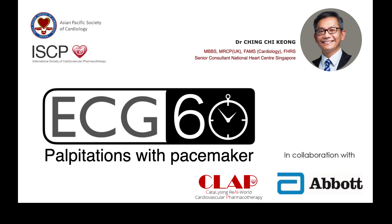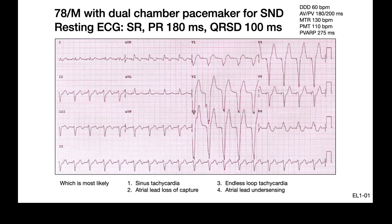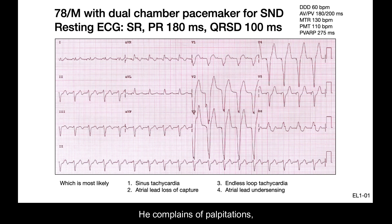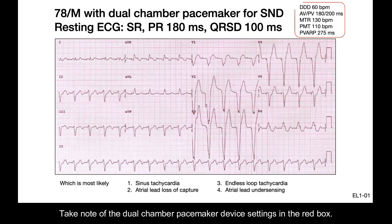This is ECG in 60 seconds. A 78-year-old man with a dual chamber pacemaker for sinus node dysfunction complains of palpitations, and this is a resting ECG recorded. Take note of the dual chamber pacemaker device settings in the red box.